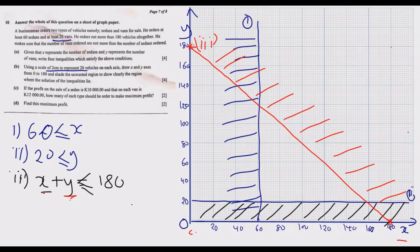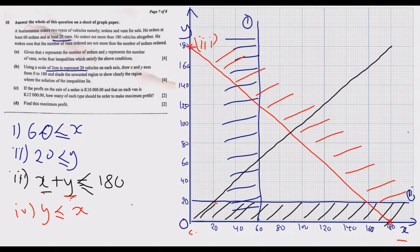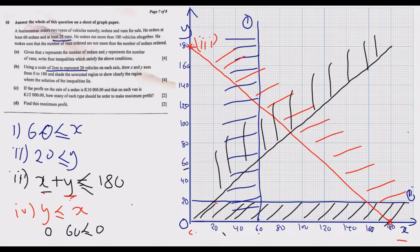Inequality four: y ≤ x. This is the same line as y = x, where the values are equal throughout. Since y should be less than or equal to x, the wanted region is below this line. For example, at the point (60, 0), y is 0 and x is 60, which satisfies y ≤ x. The upper part of this line is the unwanted region. This gives us inequality four, completing all four.